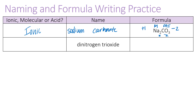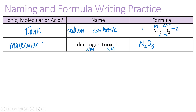The next example is dinitrogen trioxide. Nitrogen and oxygen are both non-metals, so this is a molecular compound. When naming molecular compounds we use prefixes: 'dinitrogen' tells me two nitrogens, and 'trioxide' tells me three oxygens.